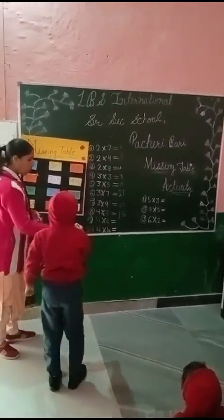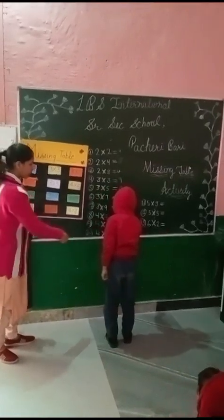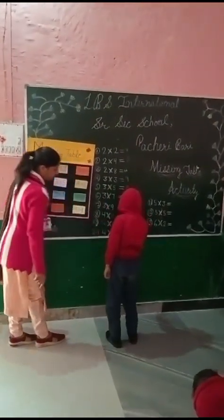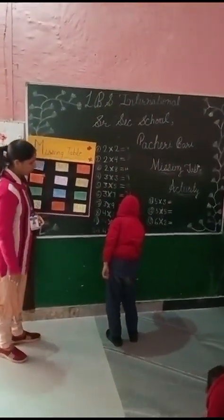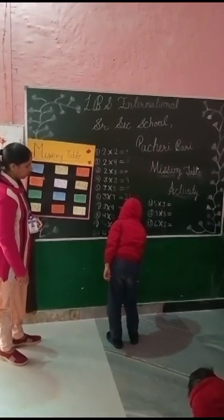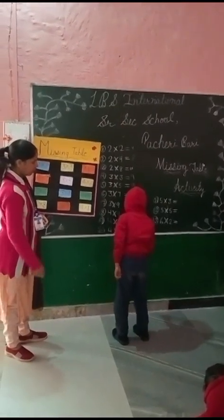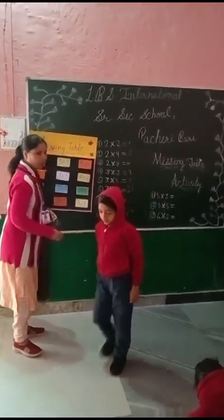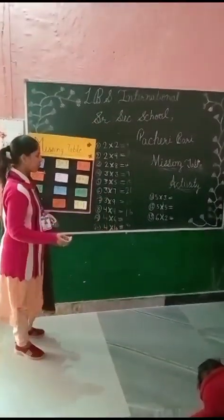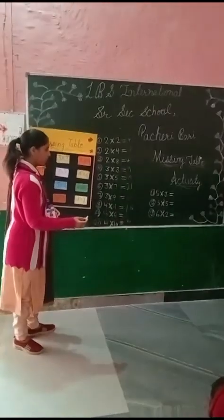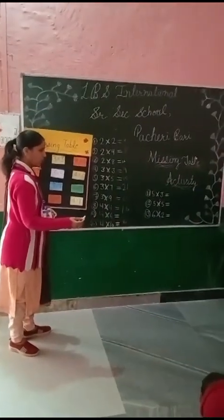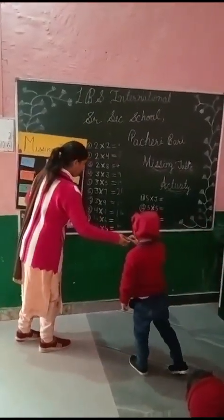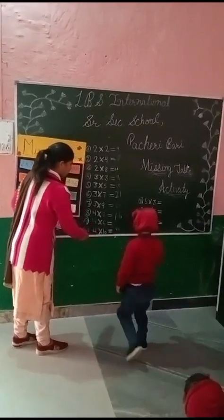Four multiply ten. Forty. Five multiply ten. Next. Four multiply six.